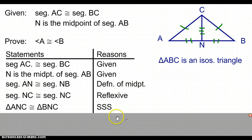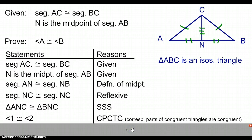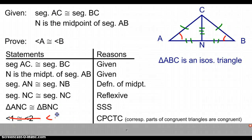Because the triangles are congruent, that means that our corresponding parts are congruent. There is a theorem called corresponding parts of congruent triangles are congruent. Because the triangles are congruent, all their parts are congruent, and so therefore angle A and angle B must be congruent. So, angle A is congruent to angle B.